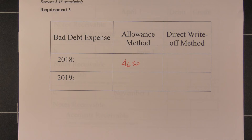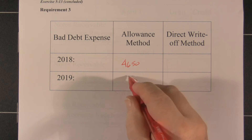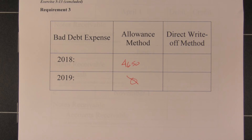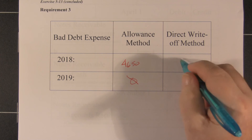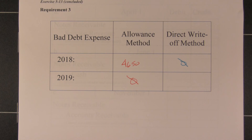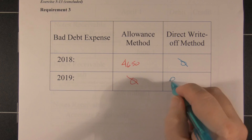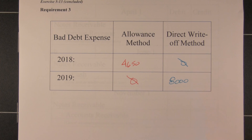In 2019, we haven't gotten there yet, so there would be no recognition in 2019 under the allowance method. Under the direct write-off method, in 2018 we didn't have any write-offs, so that would be zero, and all of our write-offs — $8,000 — would come in 2019.